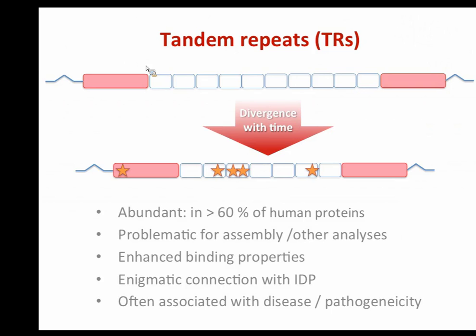What's interesting about tandem repeats is that they are actually very abundant. According to our recent estimates, over 60% of human proteins actually contain tandem repeats, which is a much greater amount than previously described. The last census of proteins with tandem repeats was accomplished in 1999 by Marcotte et al., and at that time the estimation was done with rather simplistic methods and Swiss-Prot was much smaller. Already at that time over 30% of proteins were predicted to contain tandem repeats — we now put these estimates at a much higher rate.